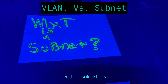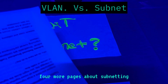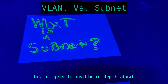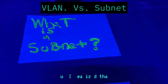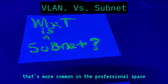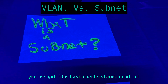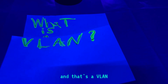So we just got done explaining a little bit what a subnet is and the problem that subnets solve. But now I want to talk about something else. Prior to this, I had about three or four more pages about subnetting, but I realized that it's kind of unnecessary information. It gets really in-depth about how to break down subnets, how to write subnets, how to configure subnets, and how many hosts and clients are on it — all the mathematics involved. But I realized you don't need to know that because there's something else that exists that's more common in the professional space than actual subnets. Now subnets exist and you've got the basic understanding of it, but there's something else you need to know about that you see more likely in the workplace, and that's a VLAN.